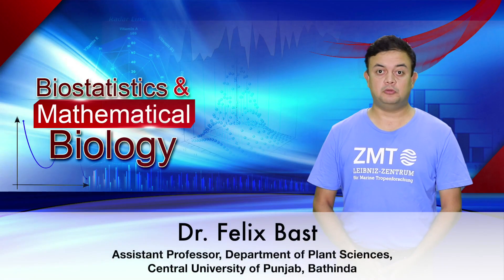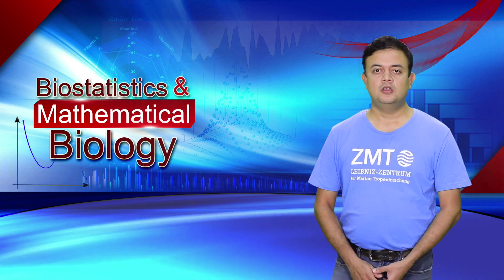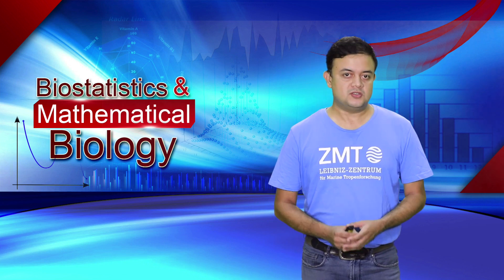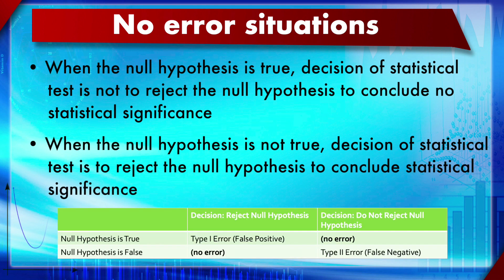Module 12, statistical hypothesis testing, section 2: false positive and false negative. First, let us see what are the no-error situations. When the null hypothesis is true and the decision of the statistical test is not to reject the null hypothesis, we conclude no statistical significance — that is true negative, no error. When the null hypothesis is not true and the decision is to reject the null hypothesis, that is true positive — also no error.